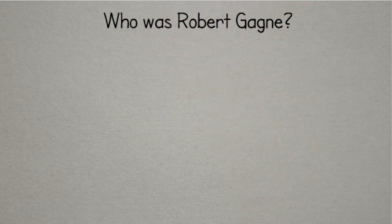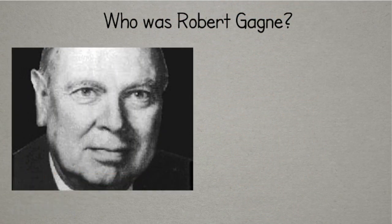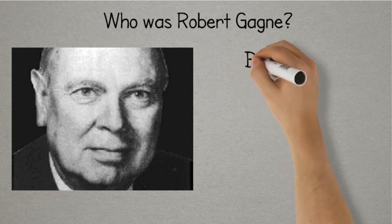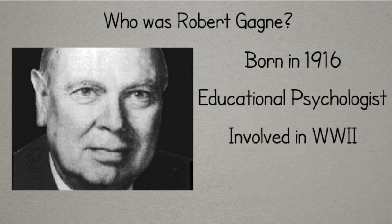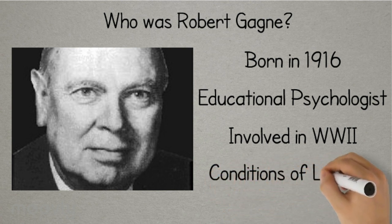So who was Robert Gagne? Well, he was born in 1916 in Massachusetts. He trained as an educational psychologist and worked in aviation during World War II. After the war, he returned to education and went on to write his seminal work, The Conditions of Learning, in 1965.